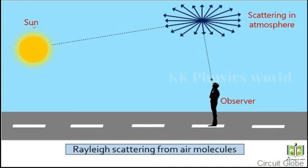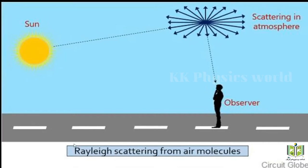Rayleigh observed that in the spectrum of scattered light there is a change in intensity of light, but there is no change in wavelength or frequency. This is known as Rayleigh scattering of light.